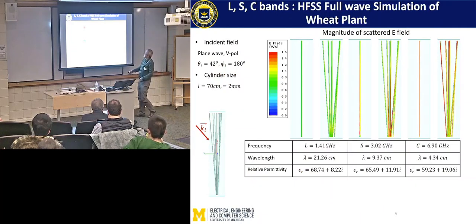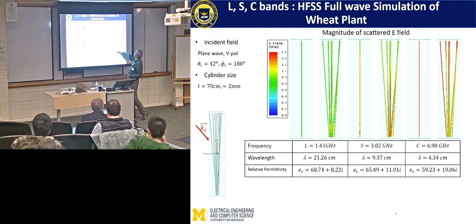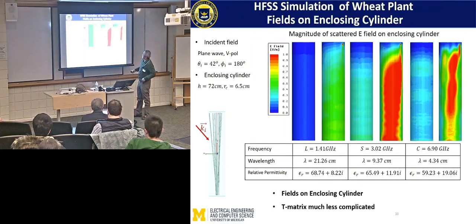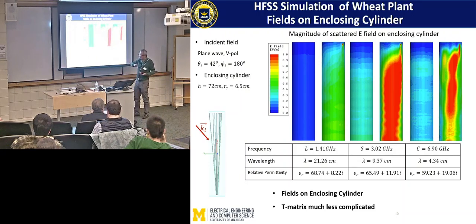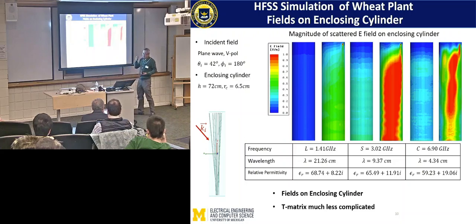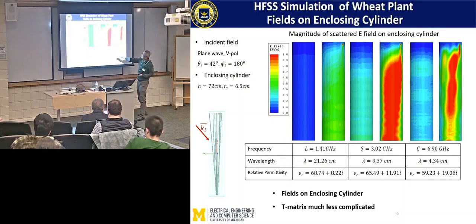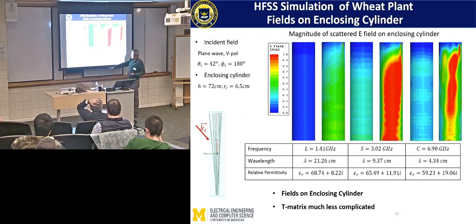Here are the steps. First, you can use HFSS and look at the fields of the wheat plants at L-band, S-band, and C-band. As you go to higher frequency, it is quite complicated. But then you enclose the plant by a cylinder and look at the surface fields — they are not as complicated. If I shine a wave on the object, the field inside is very complicated. But the way the object interacts with other objects in air is only through the T-matrix, which are the fields surrounding the cylinder. This interaction is much less complicated than taking into account each individual field inside the object. The fields on the enclosing cylinder and the T-matrix are much less complicated.